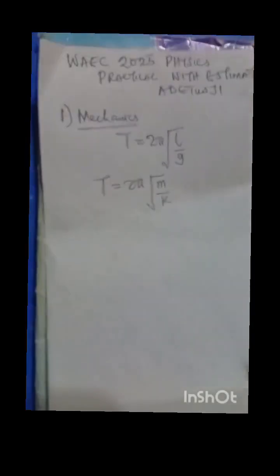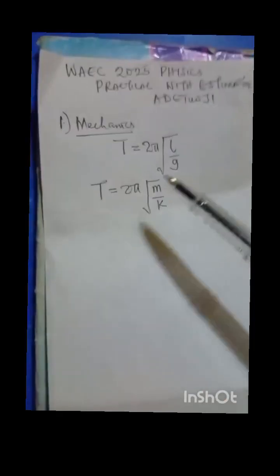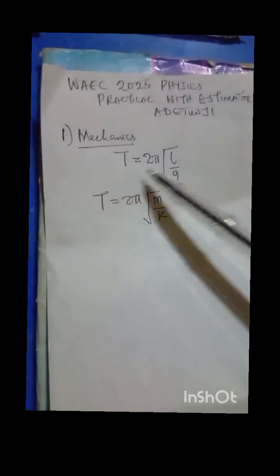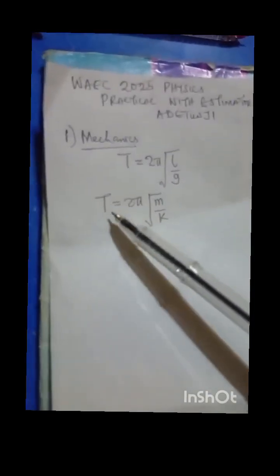I want us to come from this angle of formulas that are falling. Remember we have a formula for period that says T = 2π√(L/G), and we also have another formula 2π√(M/K). When do we use each of them? We use this one majorly when there's oscillation of time and length, while we use this one when there is oscillation of mass and period.